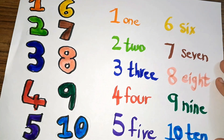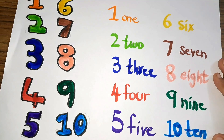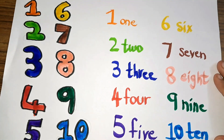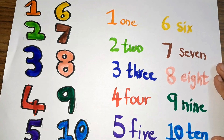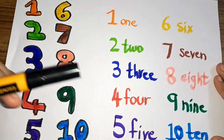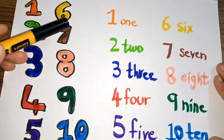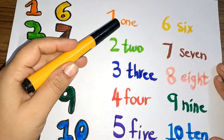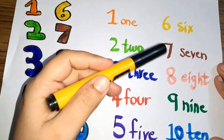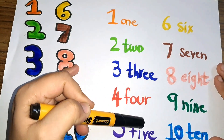Ten — number ten. So kids, we have learned numbers one to ten. We have learned the numbers and the spellings.